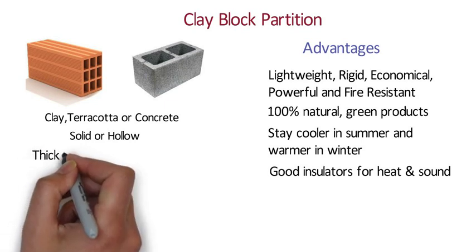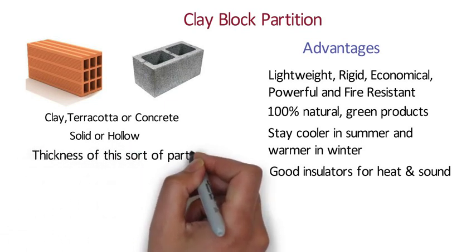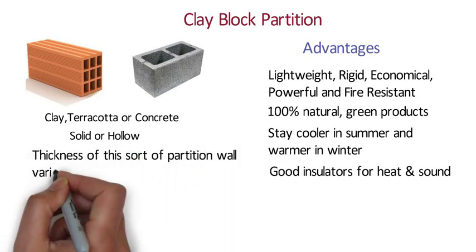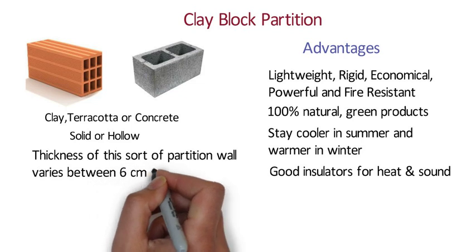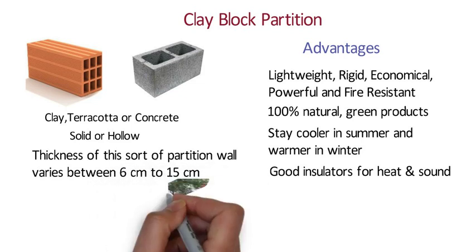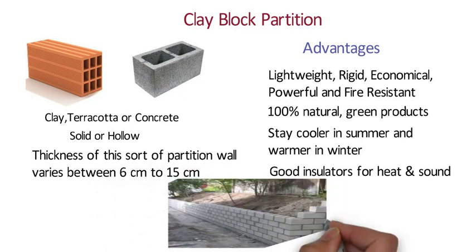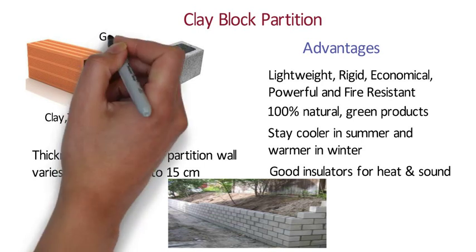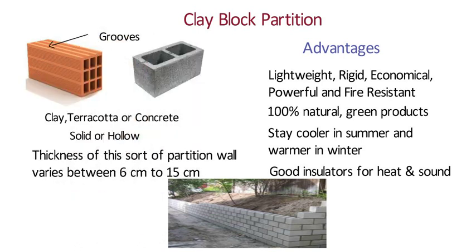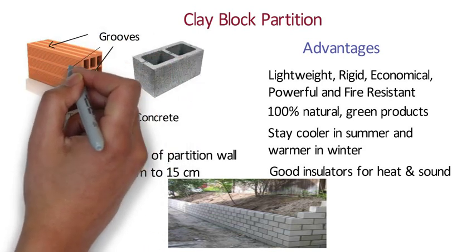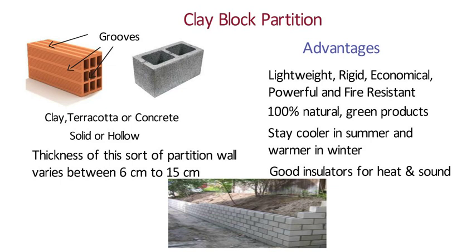The thickness of clay block partition walls varies between 6 cm to 15 cm. These walls are built in a similar fashion as brick walls. The blocks are provided with grooves on top, bottom and sides. Grooves provide rigid joints and serve as a key to plaster. The blocks are laid in cement mortar.